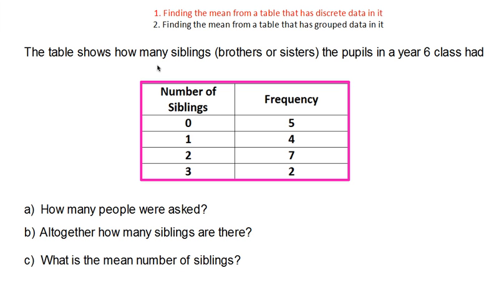There's a table shown on the screen. The table shows how many siblings, which is brothers or sisters, the pupils in a year six class had. So we've got a frequency of five for zero siblings, a frequency of four for one, a frequency of seven for two and a frequency of two for three siblings. It's really important if you're doing these kind of questions on finding a mean from a table that you understand what it is that the tables are showing you. So this frequency is the number of pupils. So it's saying that five pupils don't have any brothers or sisters, four pupils have one brother or sister, seven pupils have two brothers or sisters, and then two pupils have three brothers or sisters.